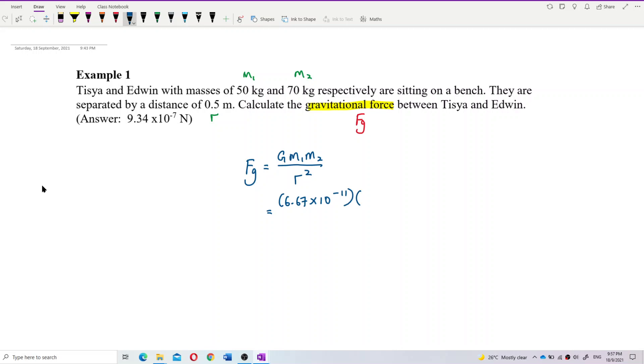Mass 1 is 50 kilogram, all in SI unit, kilogram, that's good. And then divided by the distance between them is 0.5 meter, also in SI unit. Remember to square it.